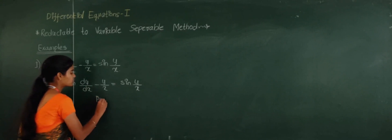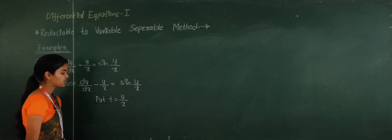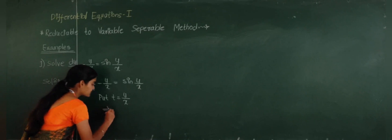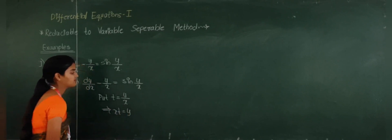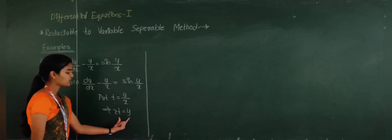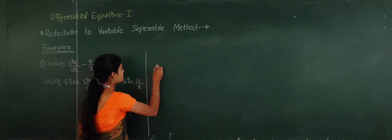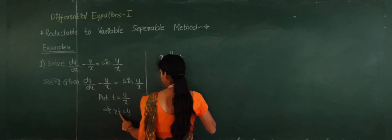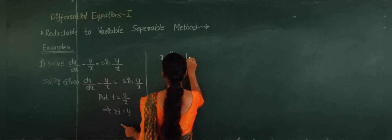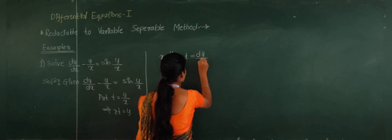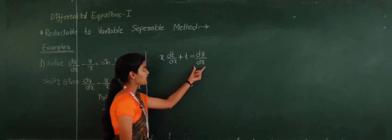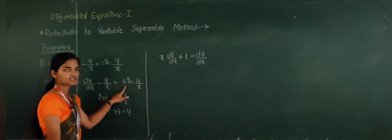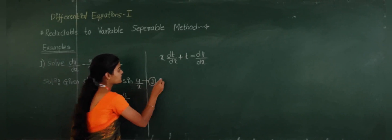Now, here I will take the substitution T = y/x. This implies x·T = y. Now, differentiate this equation with respect to x. We get: x·(dT/dx) + T·1 = dy/dx. So this gives the value for dy/dx. We will substitute this dy/dx value and this T value into the equation — let us call this equation number 1.